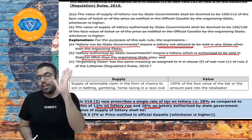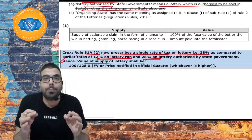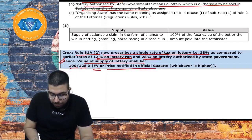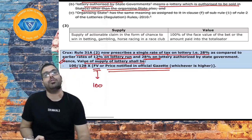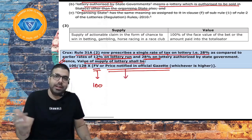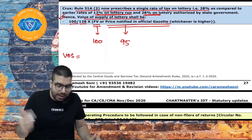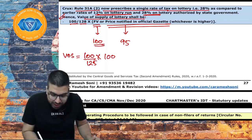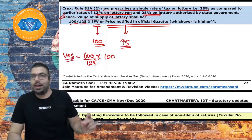How do we find the value of supply of lottery? The value of supply of lottery shall be 100/128 multiplied by either the face value or the price notified in the official gazette, whichever is higher. For example, if the face value is 100 but the price notified in the official gazette is 95, then value of supply = 100/128 × 100.